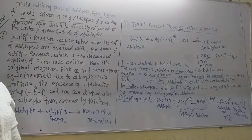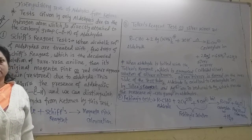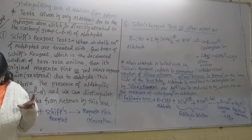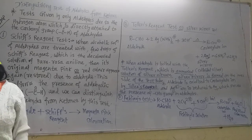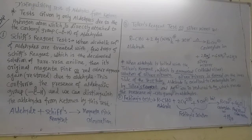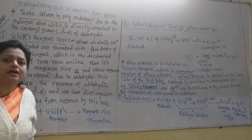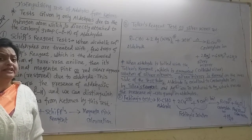Let us see how aldehydes and ketones are distinguished in the laboratory. Both aldehydes and ketones contain the carbonyl group. But aldehydes have the hydrogen atom which is directly attached to the carbonyl group. In ketones, such hydrogen is not present, because on both sides of the carbonyl group there are alkyl groups.